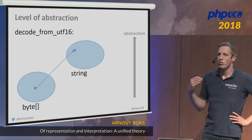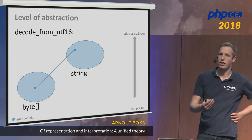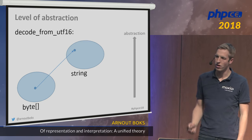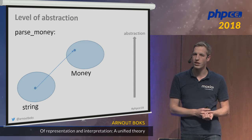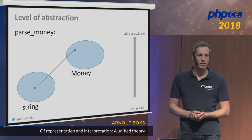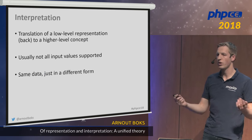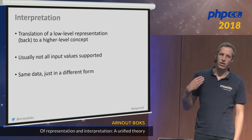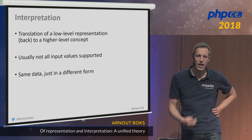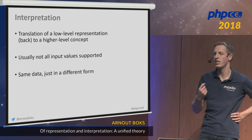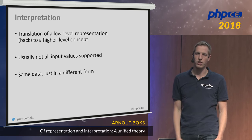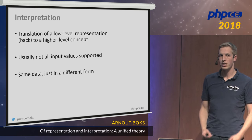We can also have functions that raise the level of abstraction back up — when decoding a UTF-16 byte sequence we get something easier to work with, or we can parse a string representation of a money type back into a money value object. This is what I call an interpretation — translating a low-level concept back to a higher-level concept. A characteristic heuristic for interpretation is that usually not the entire domain is supported — not every byte sequence is valid UTF-16, and not every string represents money.